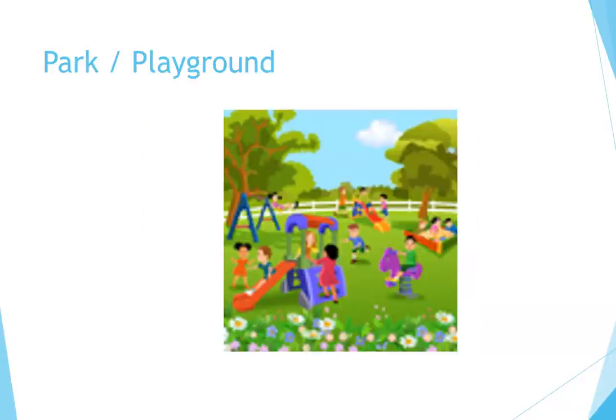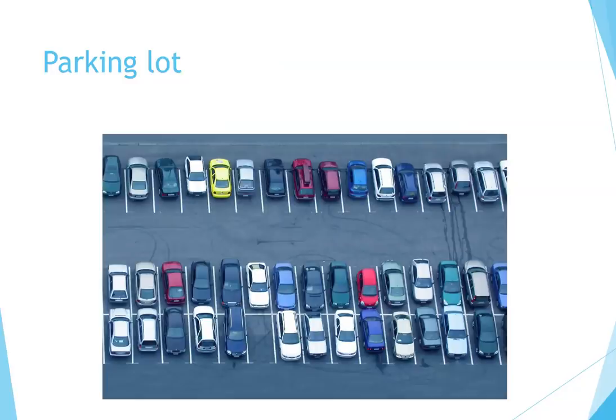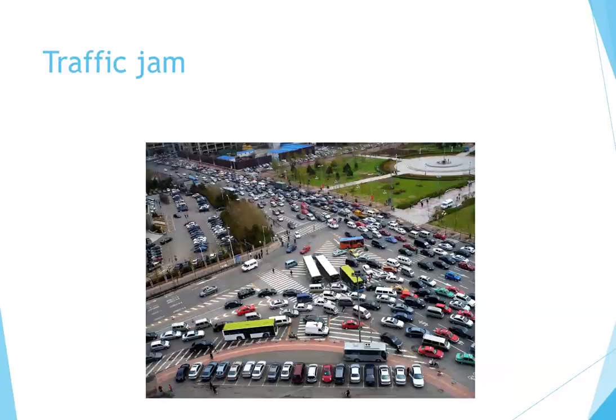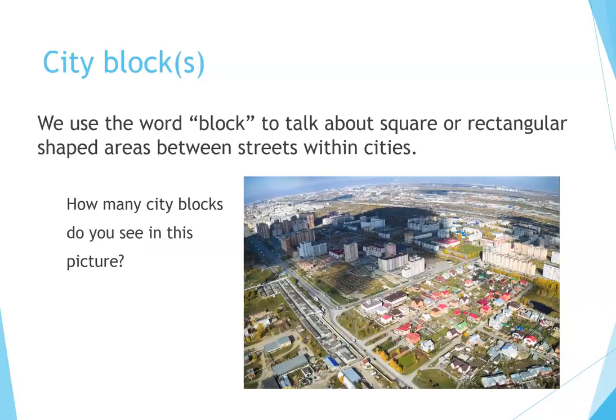Park or playground: a park or playground is a place where you can take kids or pets to play. Parking lot: a parking lot is a place where you can leave your car when you go shopping. Traffic jam: a traffic jam is where cars get stuck, especially during rush hour. City blocks: we use the word 'block' to talk about square or rectangular shaped areas between streets within cities. How many city blocks do you see in this picture?